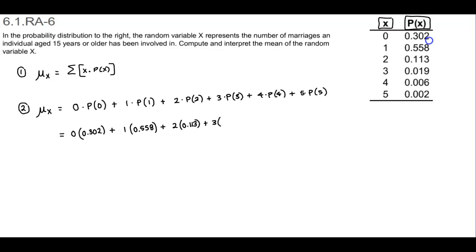Plus 3 times the probability, which is 0.019. Plus 4 times the probability of 4, which is 0.006. Plus 5 times the probability of 5, which is 0.002.